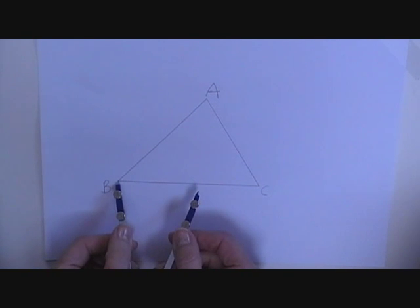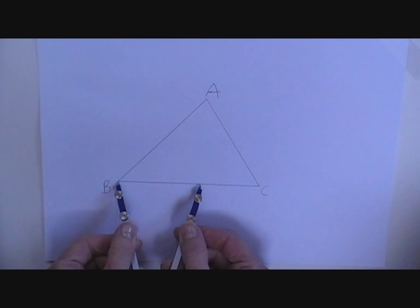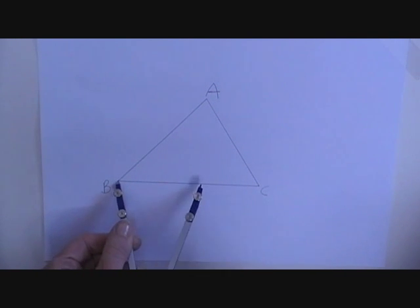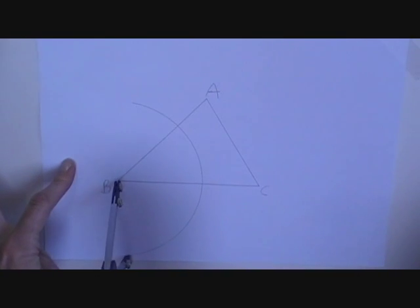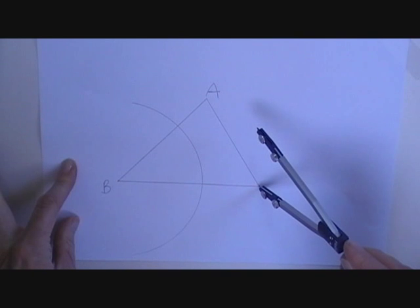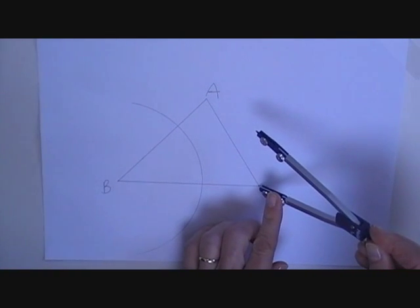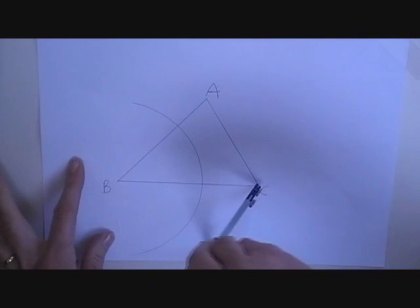I am going to stretch out the compass to be more than half the length of BC. Tip of the compass on B, spin round and form an arc. Don't change the radius. Tip of the compass on C and spin round and form an arc.